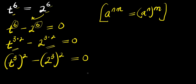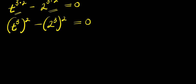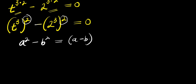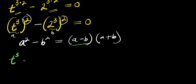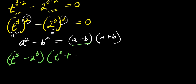Now the next step is to make use of difference of two squares, because there is a power of 2 here and a power of 2 here, and the separation is negative. Remember, difference of two squares: if you have a power 2 minus b power 2, this equals a minus b times a plus b. Here t cubed is our a and 2 cubed is our b. So for a minus b we have t power 3 minus 2 power 3, times for a plus b we have t power 3 plus 2 power 3, and this equals 0.